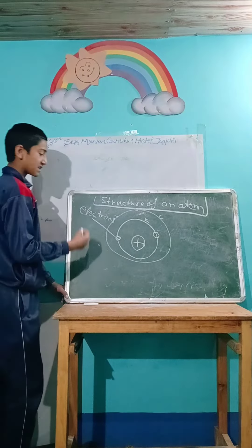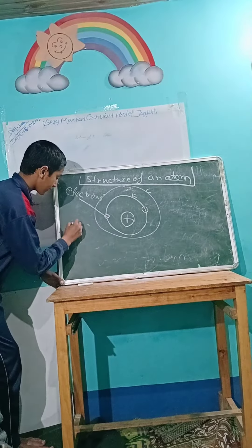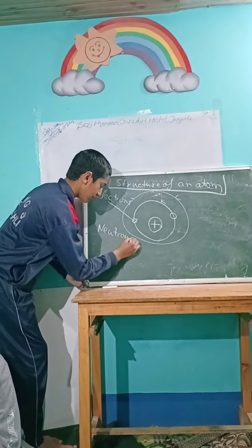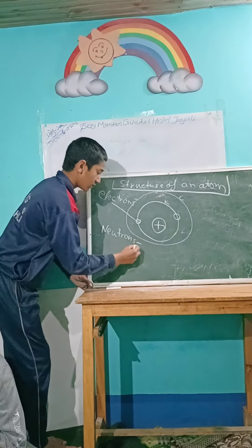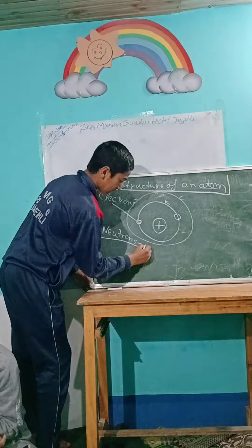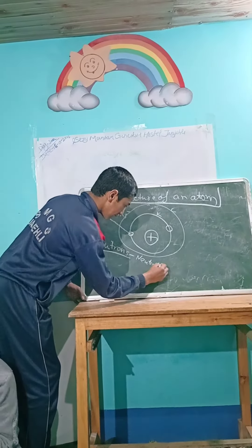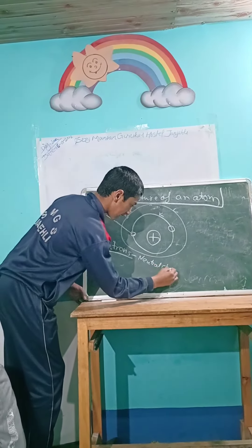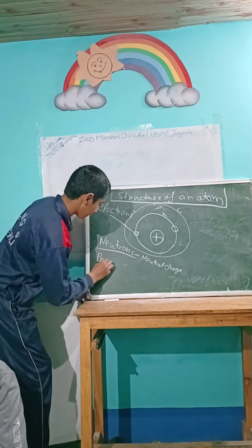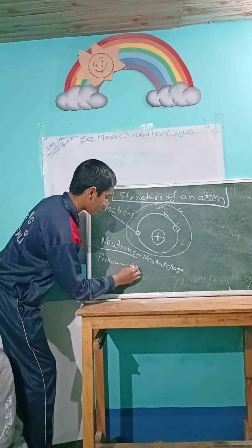Now I shall tell you about all the particles. First, there are neutrons. Neutrons have neutral charge. And then protons — protons have positive charge.